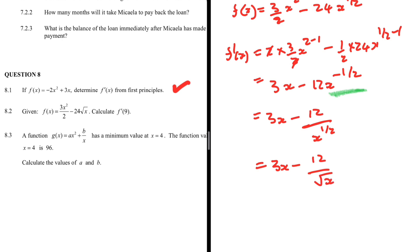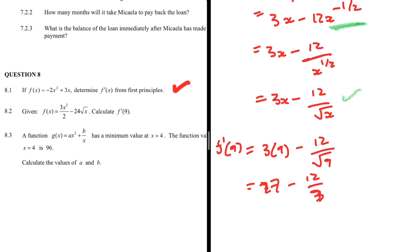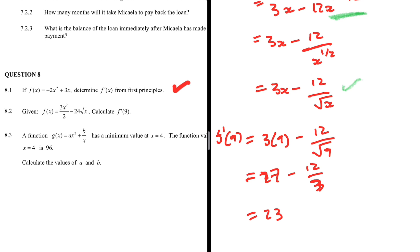Now we find f prime of 9 by substituting x = 9: f prime of 9 = 3(9) - 12/√9 = 27 - 12/3 = 27 - 4 = 23. So f prime of 9 = 23. That is question 8.2 — straightforward, sticking to the basics.